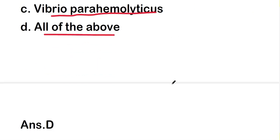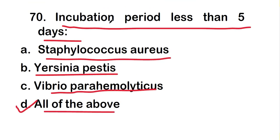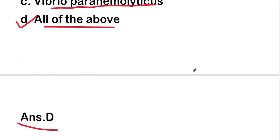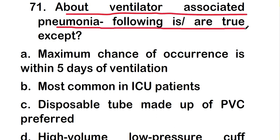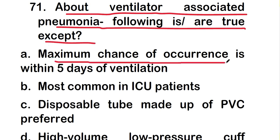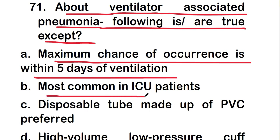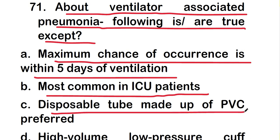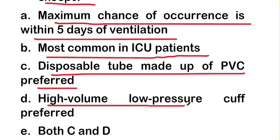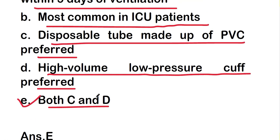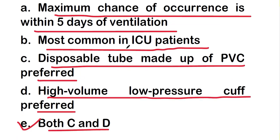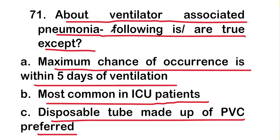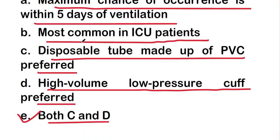The right answer for the previous question is option D, all of the above — the incubation period for all those organisms is less than five days. The next question is about ventilator-associated pneumonia. The following is true except: maximum chances of occurrence within five days of ventilation, most common in ICU patients, disposable tube made up of PVC preferred, or high volume low pressure cuff preferred. The right answer is option E, both C and D, as these two options are not correct regarding ventilator-associated pneumonia.